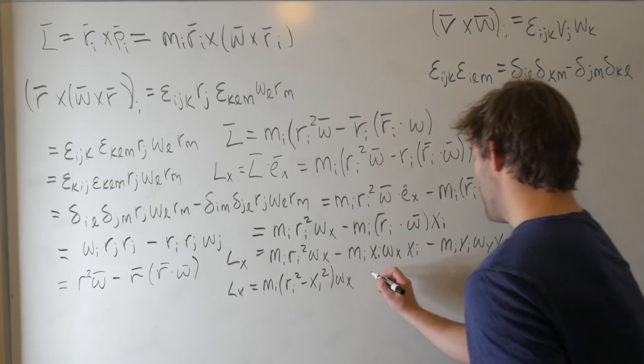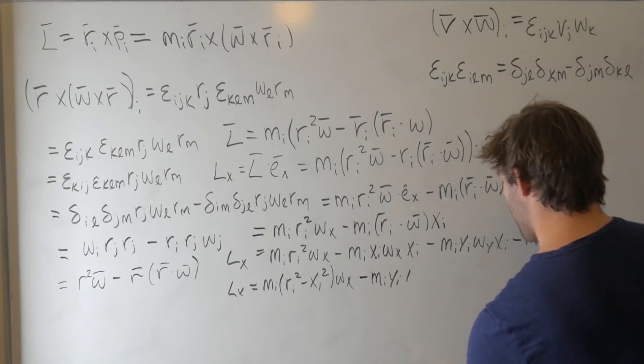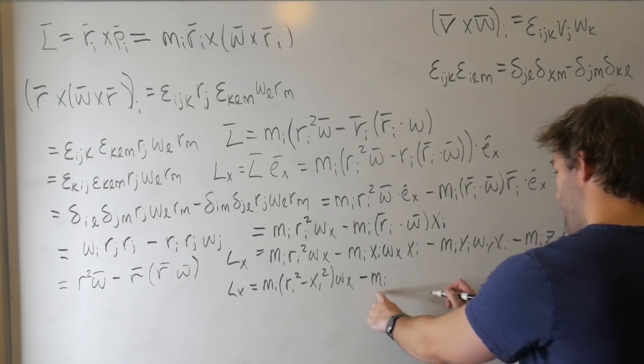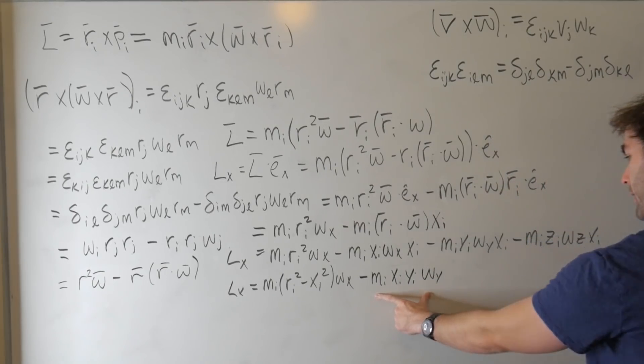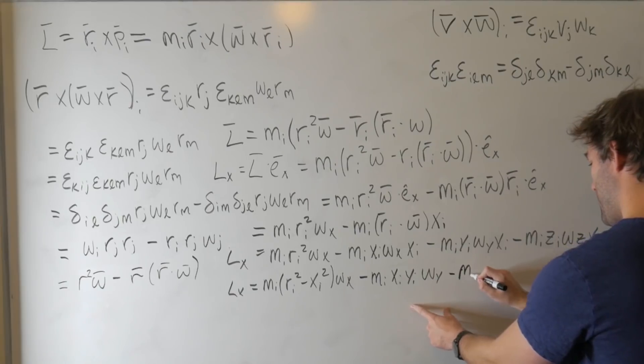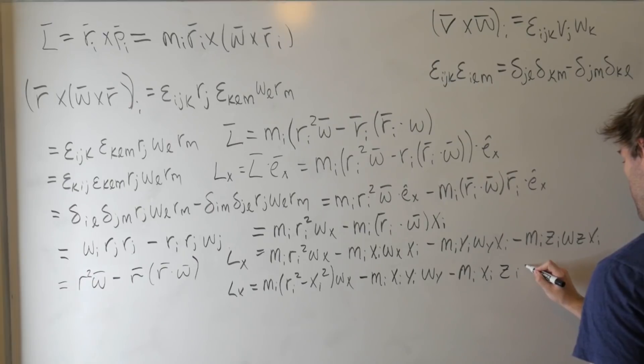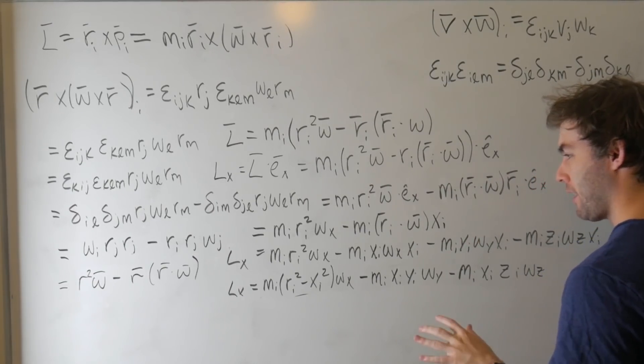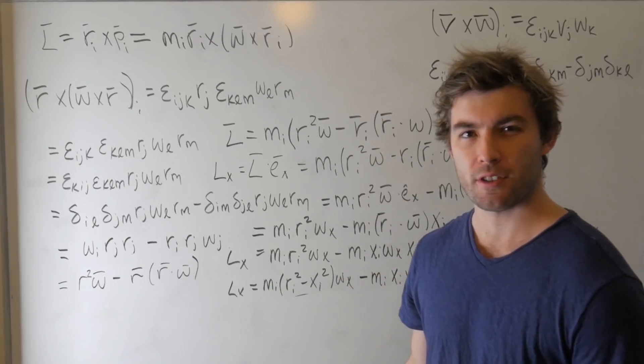And then we've got these terms, minus m_i. I'm going to move this around just a little bit. I want the x to show up first just to make things more suggestive. So it'll be m_i x_i y_i omega_y minus m_i x_i z_i omega_z. I know that this looks a little complicated, but we're basically done.